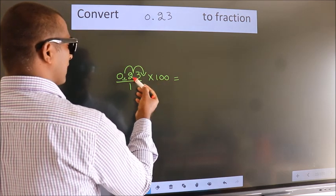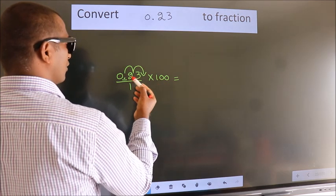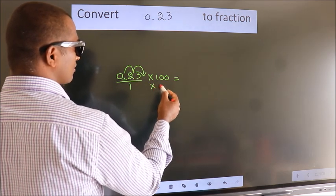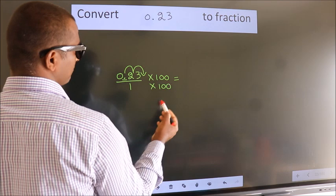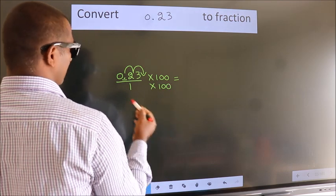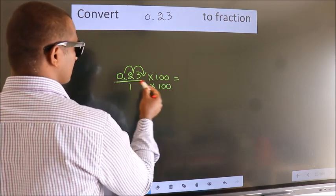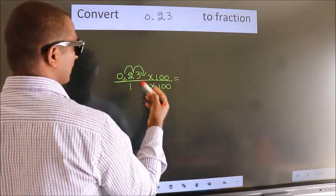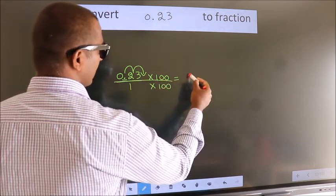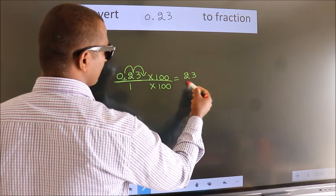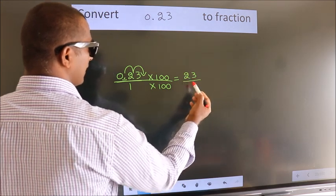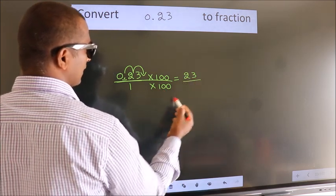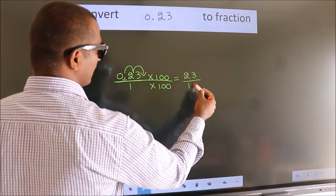Whatever we are multiplying in the numerator, in the denominator also we should multiply by the same. Now, 0.23 multiplied by 100, we get 23. In the denominator, 1 multiplied by 100 gives 100.